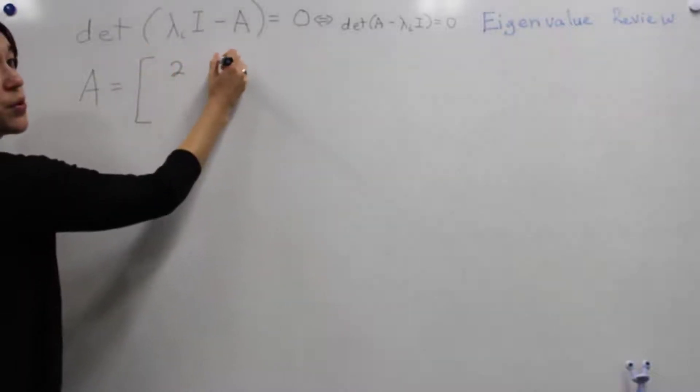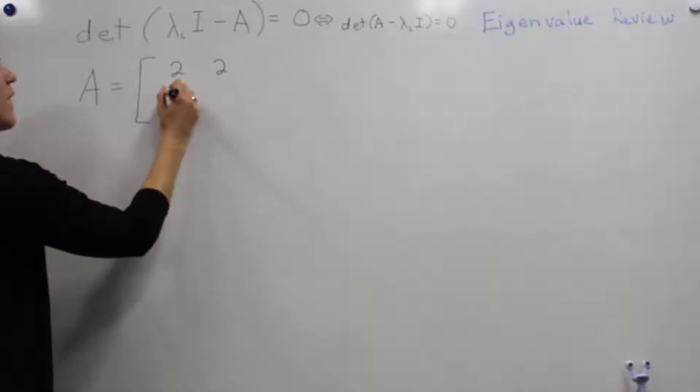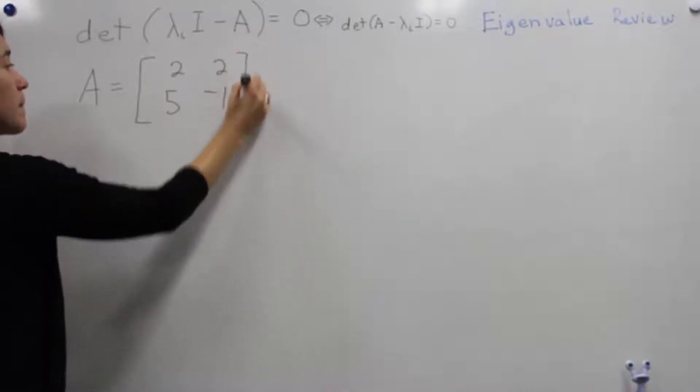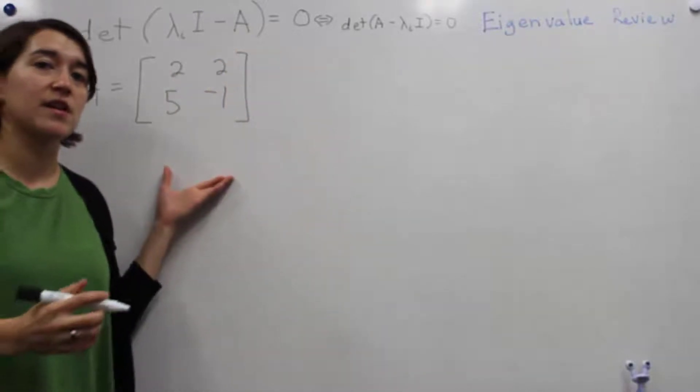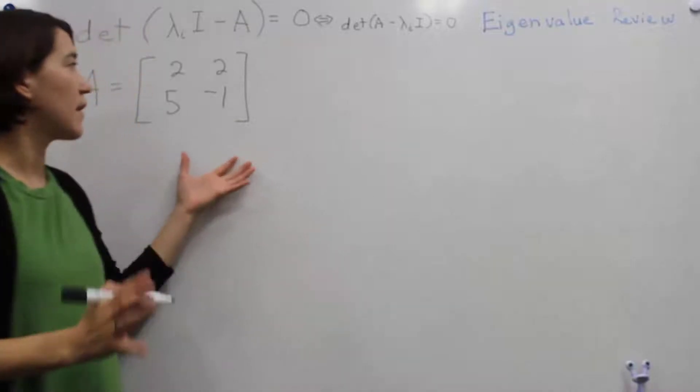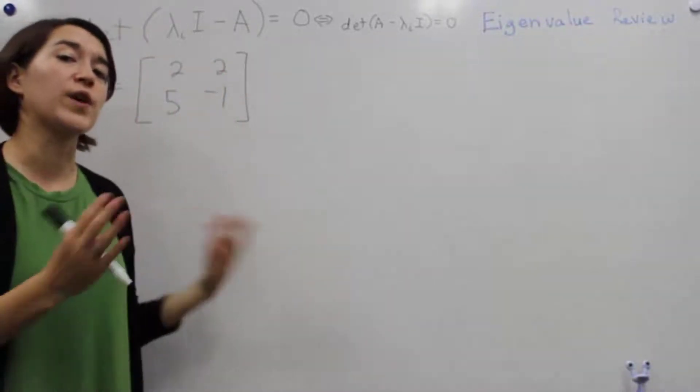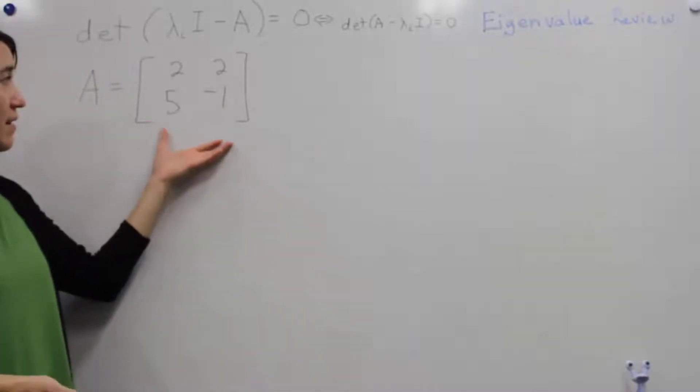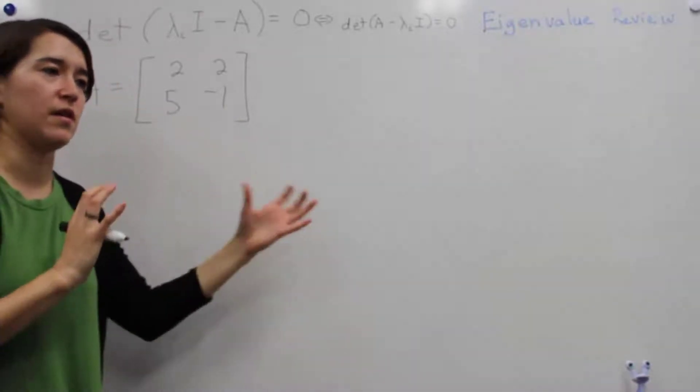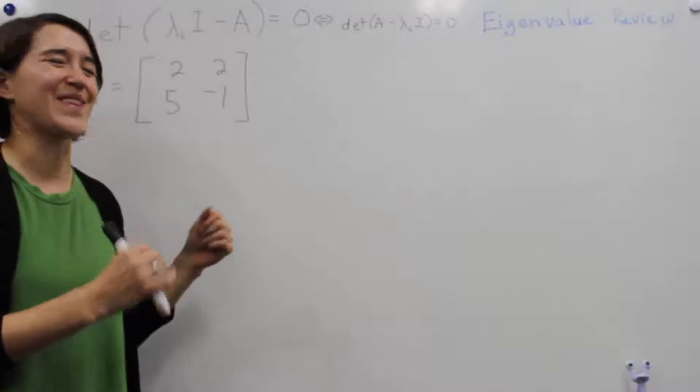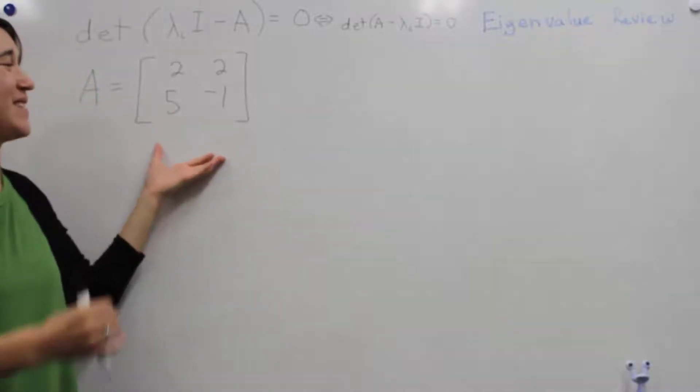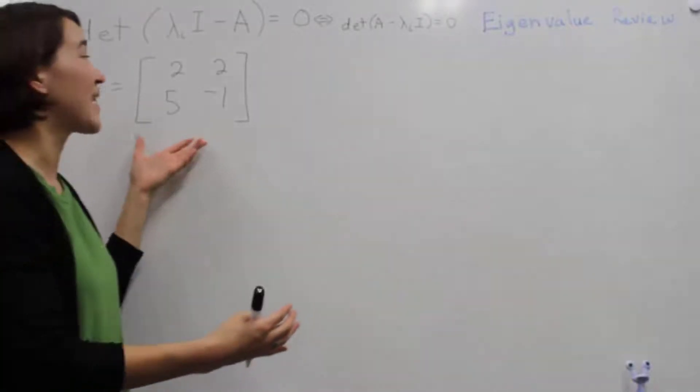Let's pick a matrix. We'll go with [[2, 2], [5, -1]]. Here's our matrix. In a system, this represents different dynamics within the system. We'll get to that later, but once you've gotten your system into state space, we'll have a nice matrix like this. Now we can do some analysis.